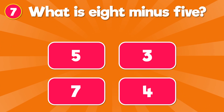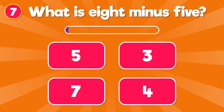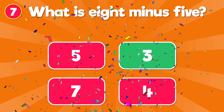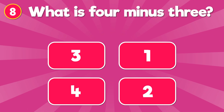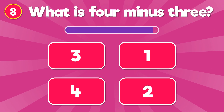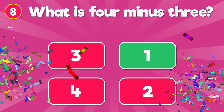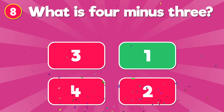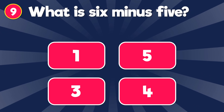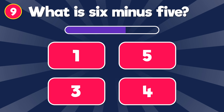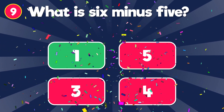What is 8 minus 5? The correct answer is 3. 8 minus 5 is 3. What is 4 minus 3? The correct answer is 1.